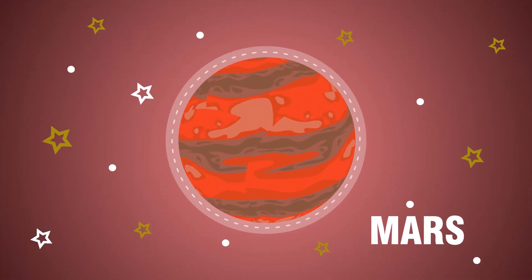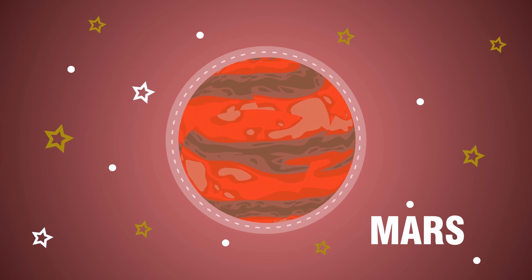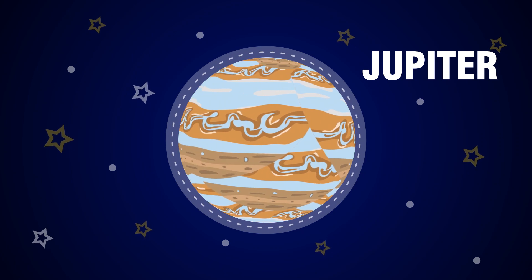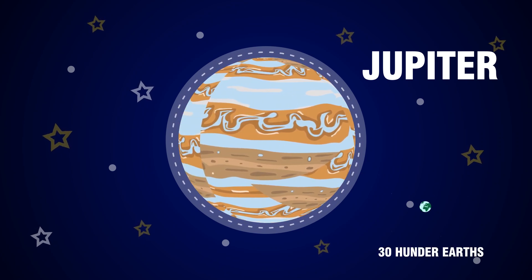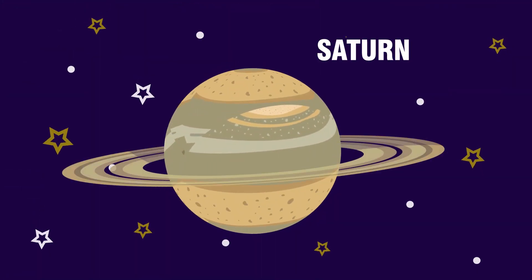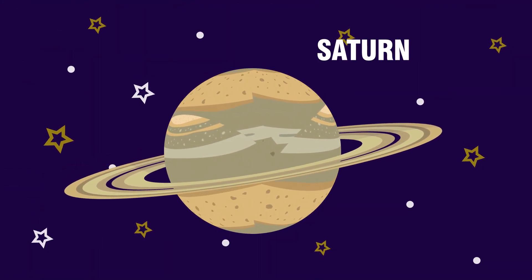Next one is Jupiter. It is the biggest and gaseous planet in our solar system. It can occupy almost 1300 Earths within it. Next is Saturn. It is the second largest planet and has rings which look like a hollow hoop.